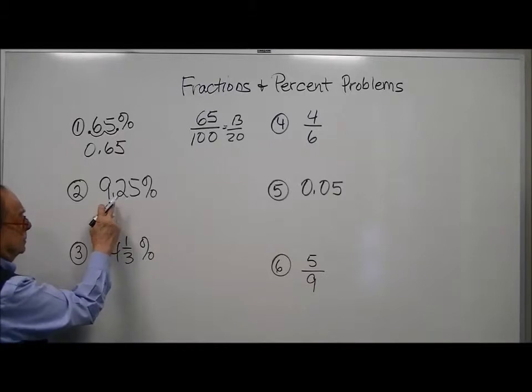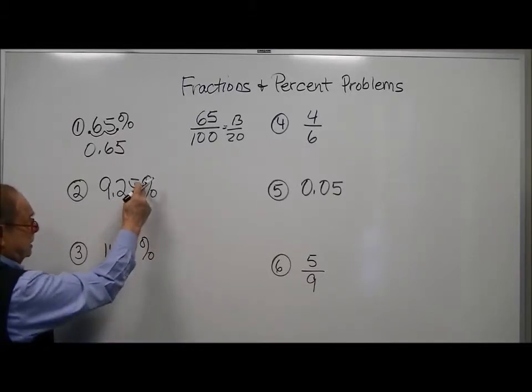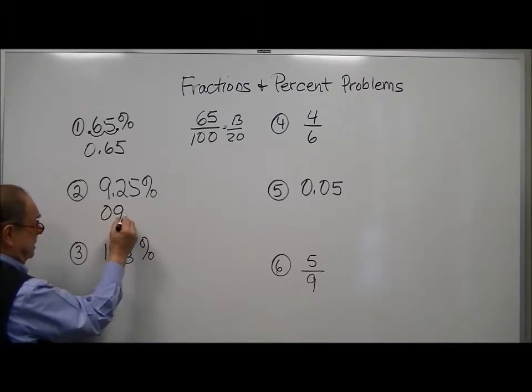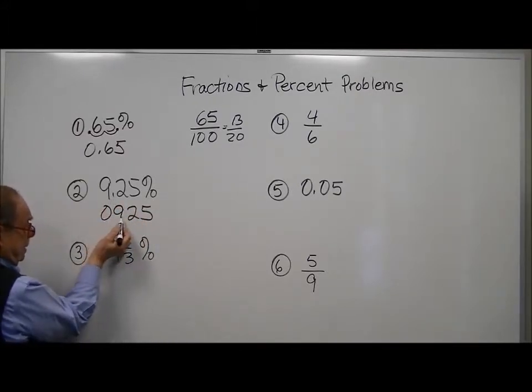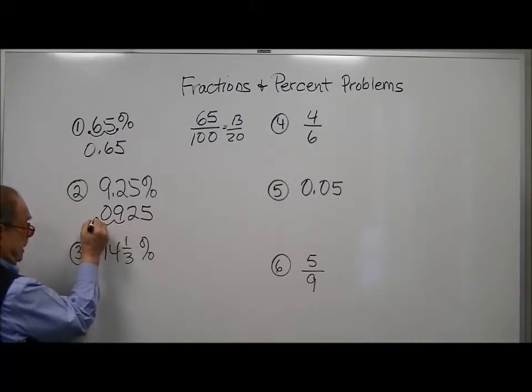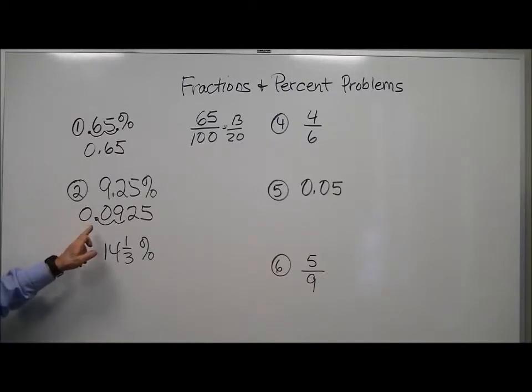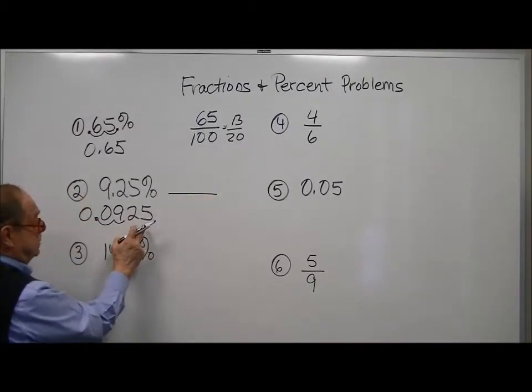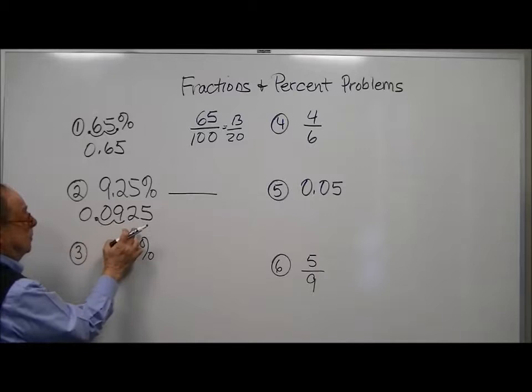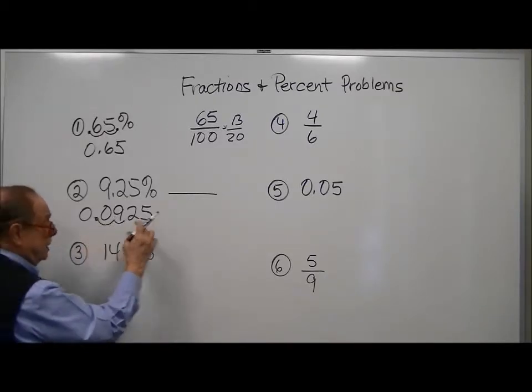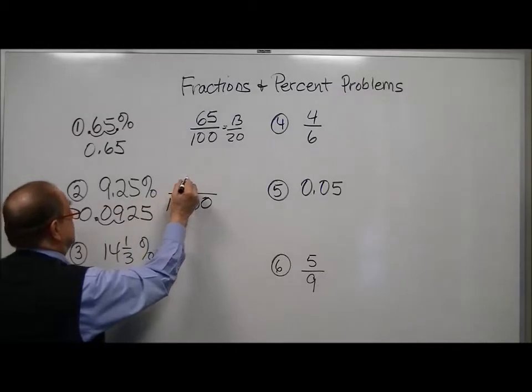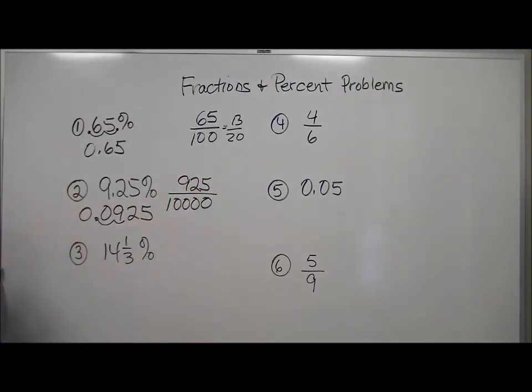So in this one, let's change it to a decimal first. We're going to take away the percent sign, and we'll have to add a zero there because our decimal is here. And we usually put another zero to fix where the decimal is. Now to convert this to a regular fraction, how many places do we have here in its decimal form? One, two, three, four. So you will need four zeros and a one, and just put this up on top.